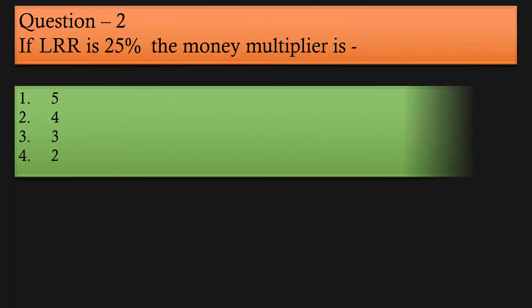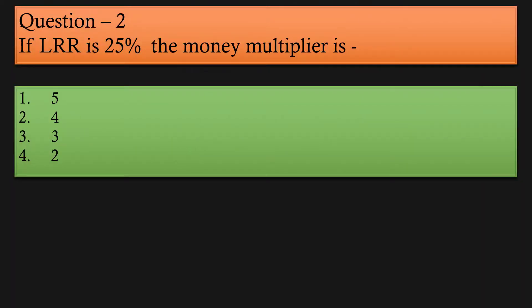Question 2: If legal reserve ratio is 25%, the money multiplier is — (a) 5, (b) 4, (c) 3, (d) 2. Option 2 is correct, the answer is 4.